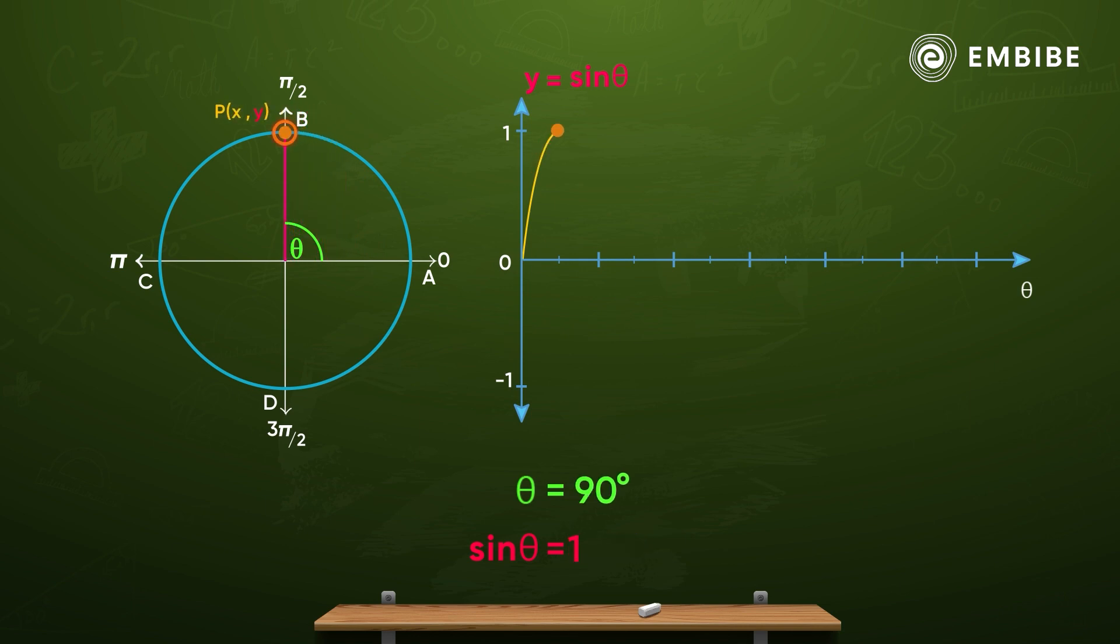And we will go to point B, where the theta will be pi by 2. And here, the y will be equal to the radius of this circle.